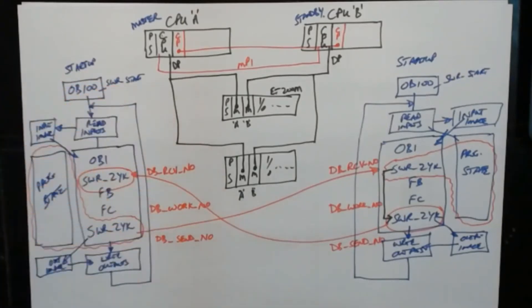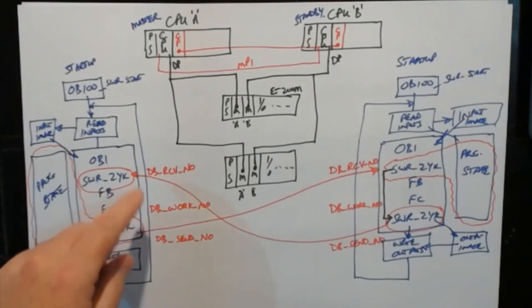These DBs are created at runtime when we start up the CPU and we run SWR start. These three are created in memory in the CPU. They do not need to be in your project. They are created. The only thing you do need to do is reserve DBs.